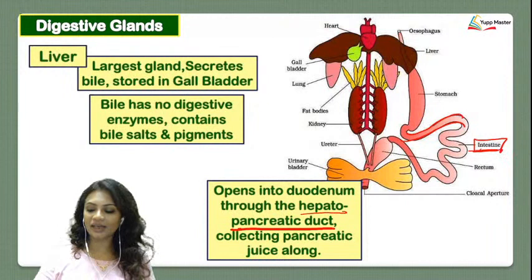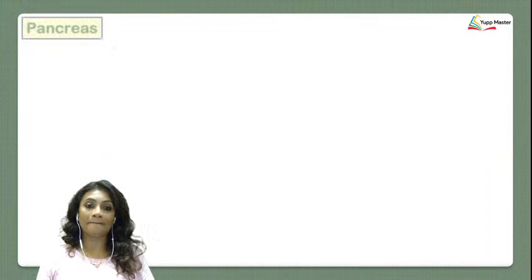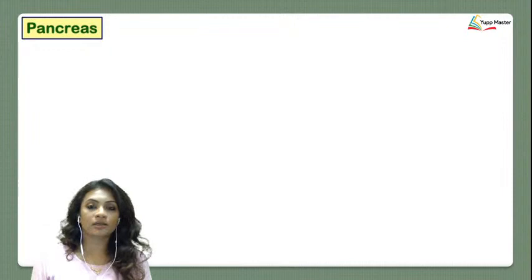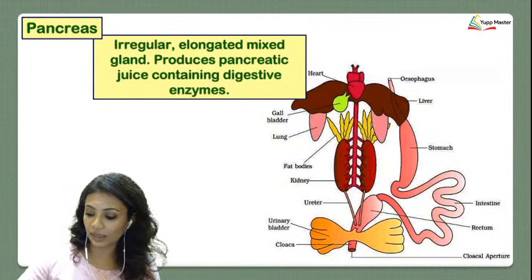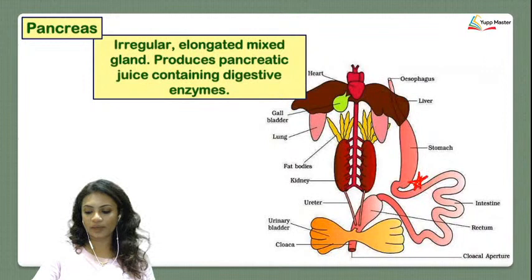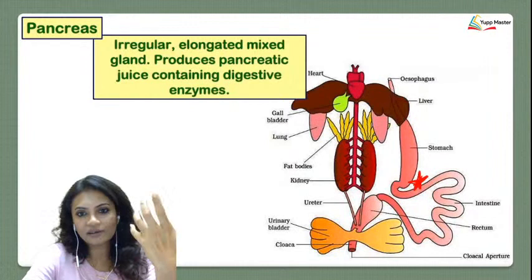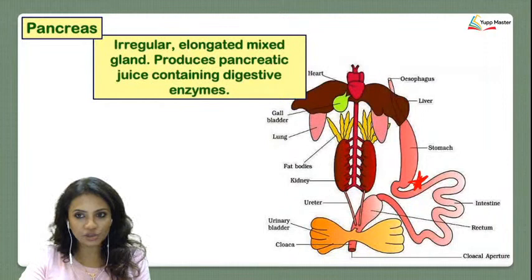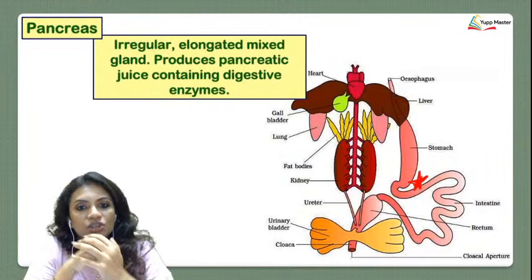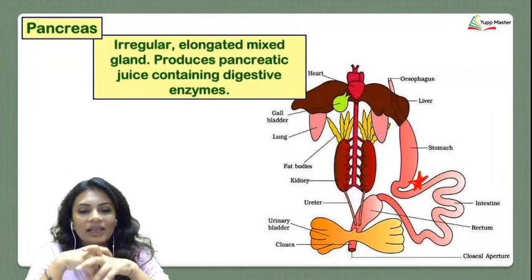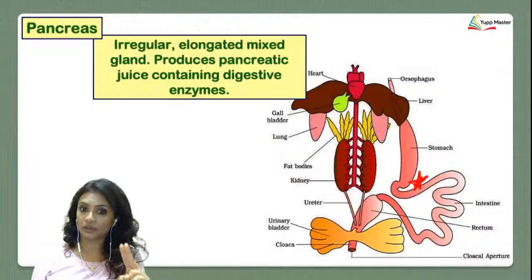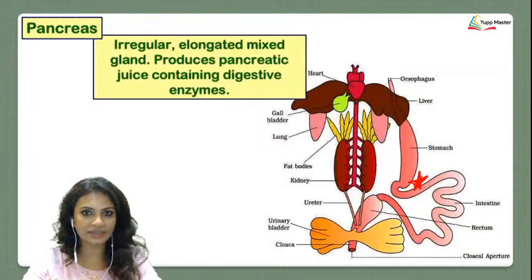The next digestive gland is the pancreas, located between the stomach and the intestine. The pancreas is irregular, elongated, and a mixed gland — just like in humans. It produces pancreatic juice containing digestive enzymes. Being a mixed gland means it produces both enzymes and hormones.